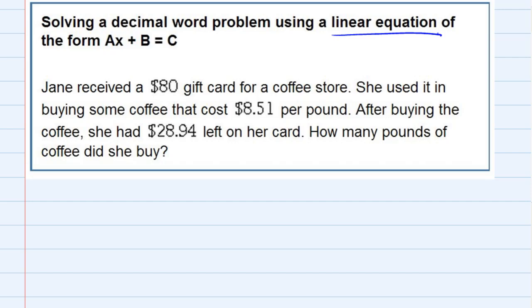She used it in buying some coffee that cost $8.51 per pound. After buying the coffee, she had $28.94 left on the card. The question is: how many pounds of coffee did she buy?